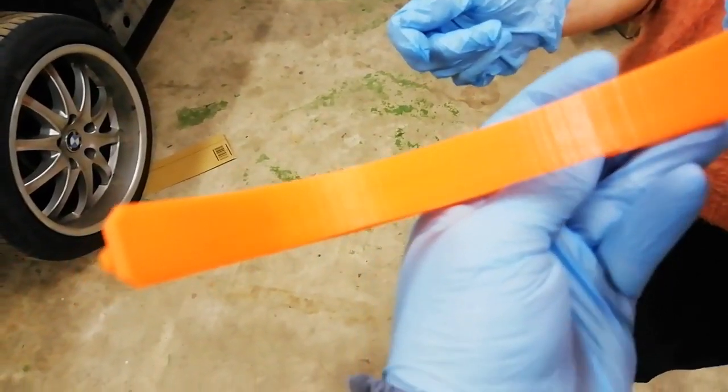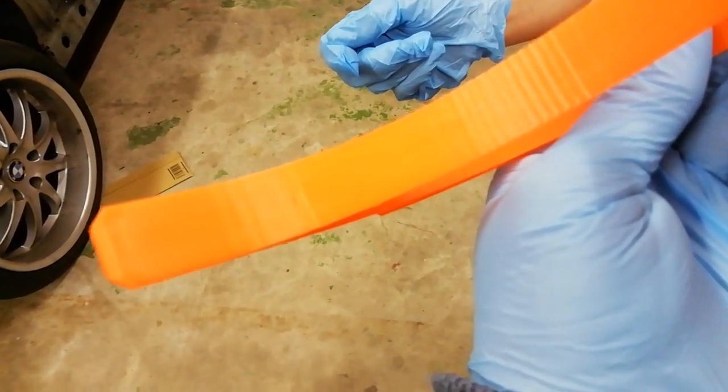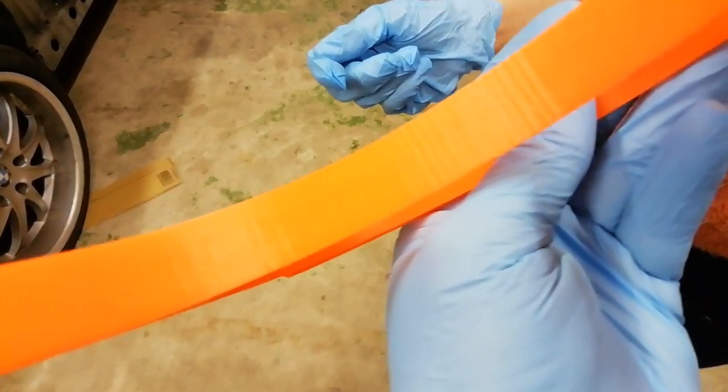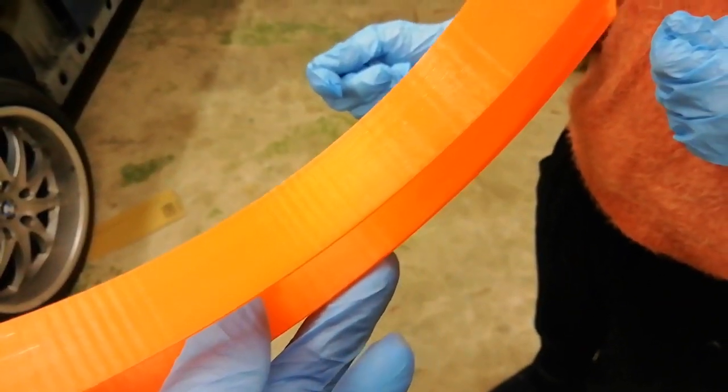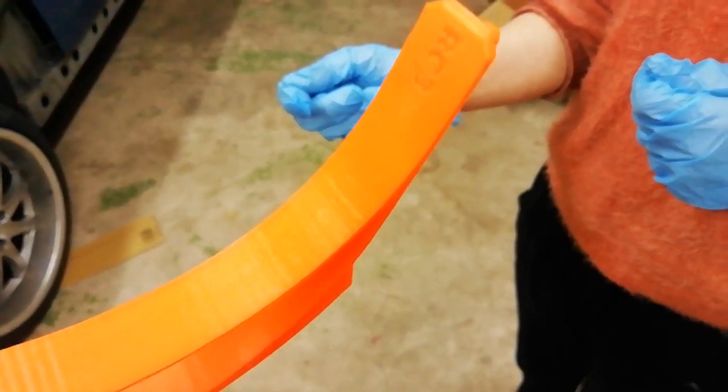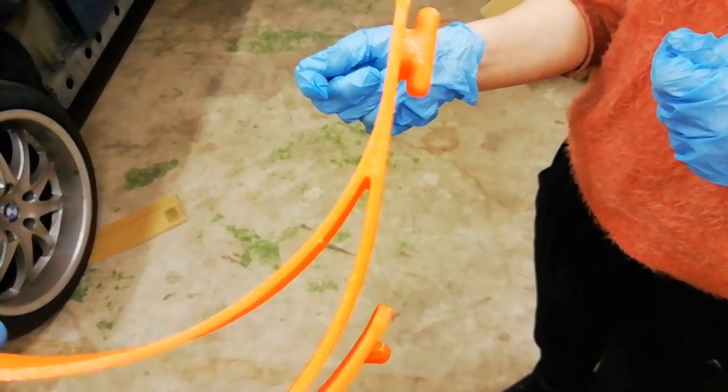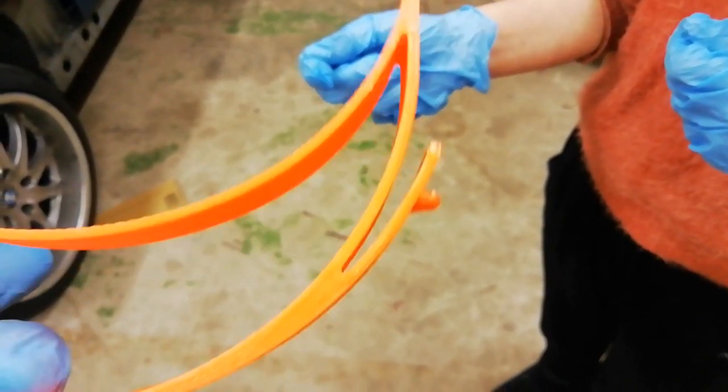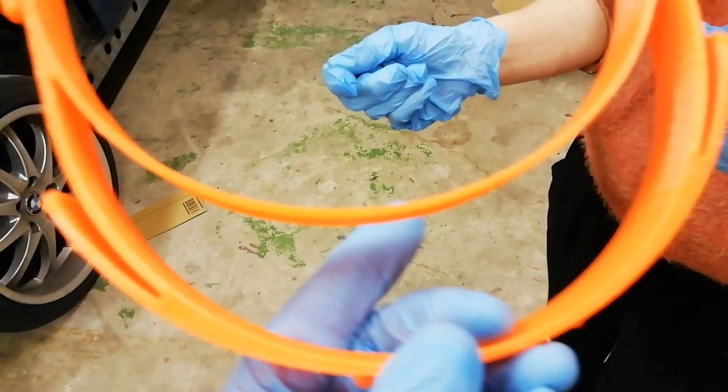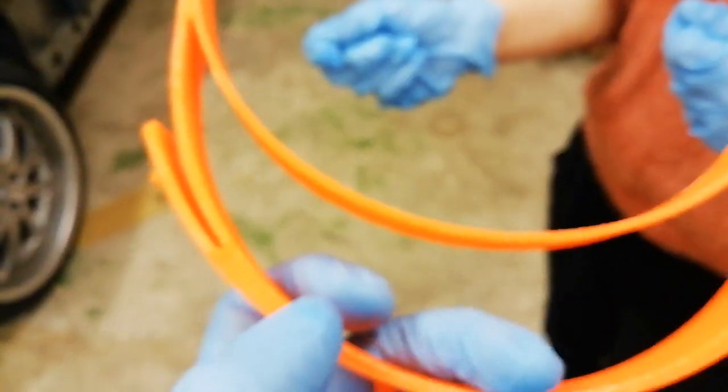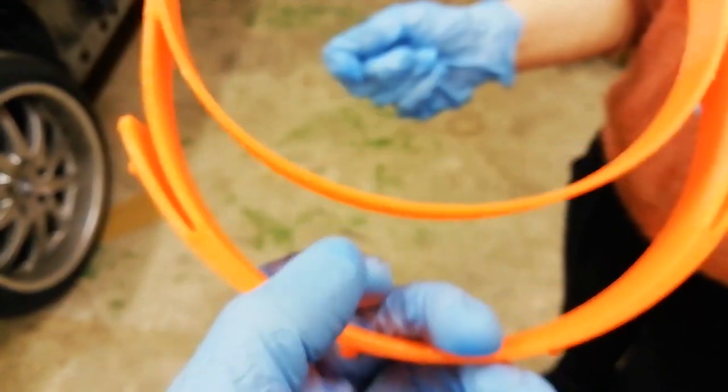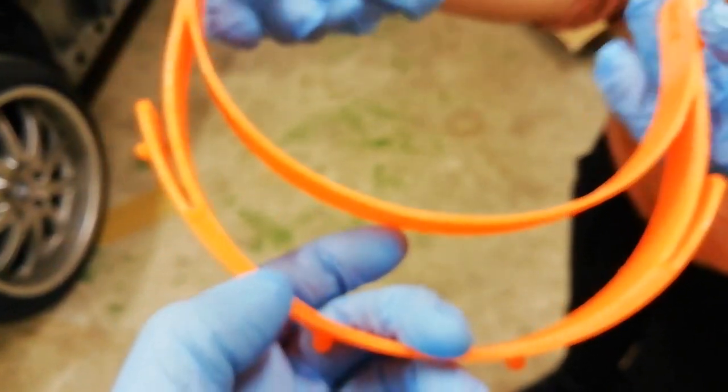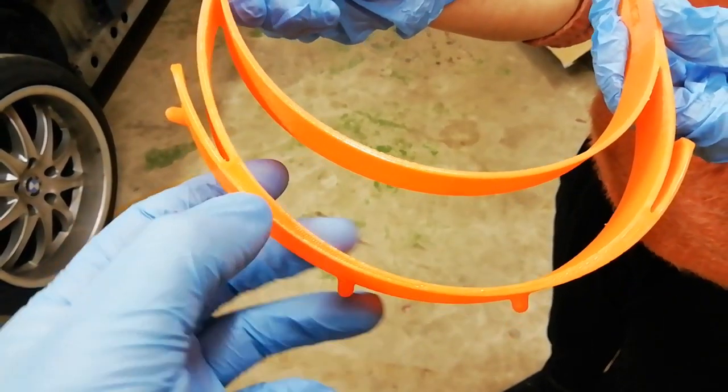When you look around the headband, the part that's going to be actually on the operator's head, you can see there's no roughness and there's no stringing. Additionally in this area here there's no voids.